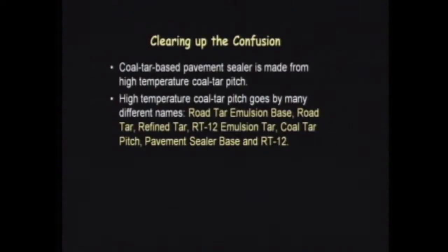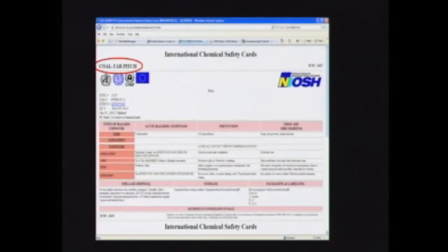The many different names is the source of the confusion, and it's quite understandable. Fortunately, there is a way to identify this material because there is an international agency called the Chemical Abstract Service, and they assign a unique numerical identifier to all chemical compounds. That number is called a CAS number. For coal tar pitch, that CAS number is 65996-93-2 — it's like its social security number. Regardless of what it's called, if you see that CAS number on a list of ingredients, you know it contains coal tar pitch.